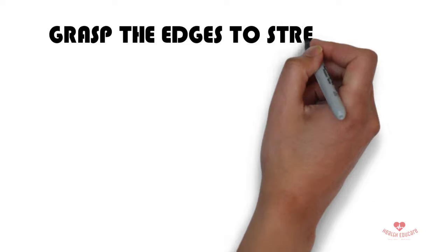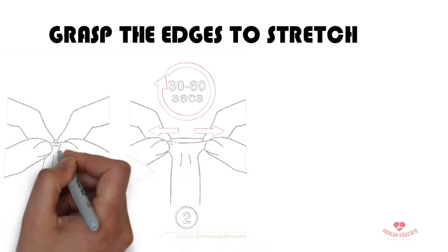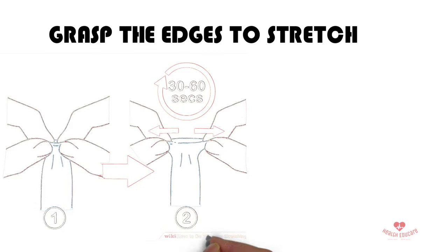Grasp the edges to stretch. If you have an open ring but the foreskin is still too tight to place your fingers inside, stretch the skin by holding onto the edges.